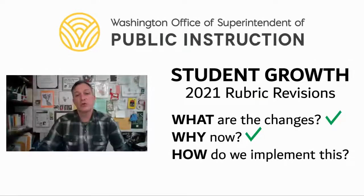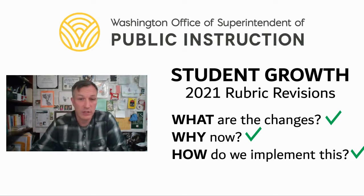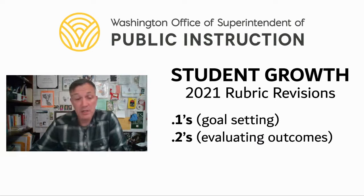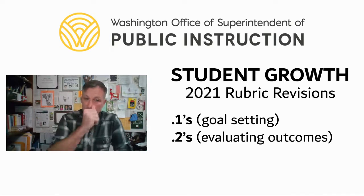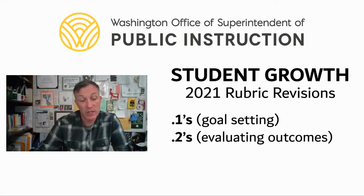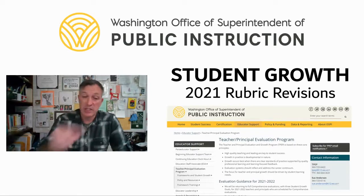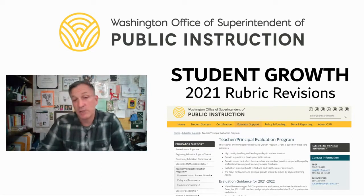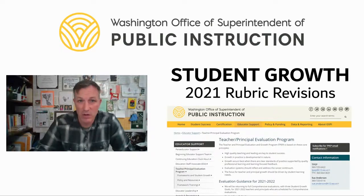We've talked about what the changes were, why now, and what are some ideas about how we might implement these changes to our student growth evaluation. This video focused on the goal setting elements of the rubrics. There is a separate video that talks about the outputs — the point twos — and what that might look like in practice. All of this information is housed on the OSPI website, with contact information in the bottom corner should you or your district have any questions. Best of luck this school year — continue doing the good work of promoting student growth for all students in the state of Washington.